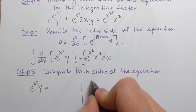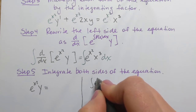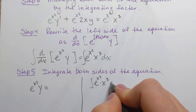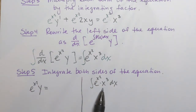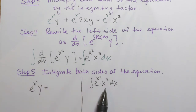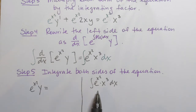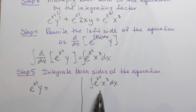For the integral of e to the power x squared times x cubed dx, we'll apply the substitution method. Since we'll also need integration by parts later, I'll use variable t instead of u to avoid confusion. Let t equal x squared, so dt equals 2x dx.